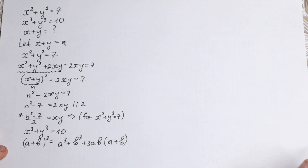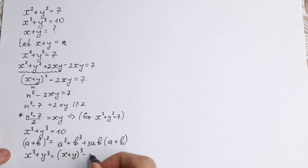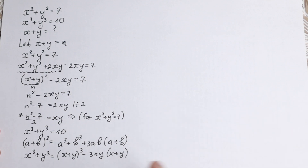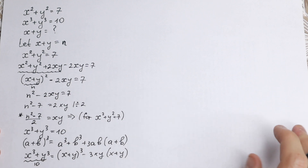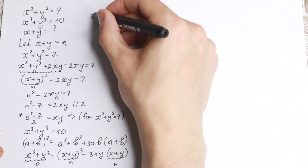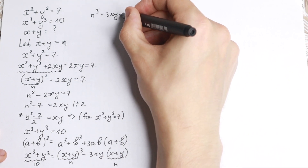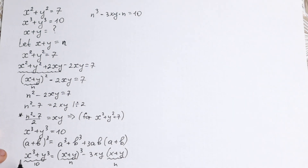Rearranging these elements, we can write x cubed plus y cubed equals (x+y) cubed minus 3xy(x+y). Since x cubed plus y cubed equals 10, and x plus y equals n, substituting gives us n cubed minus 3xy times n equals 10.